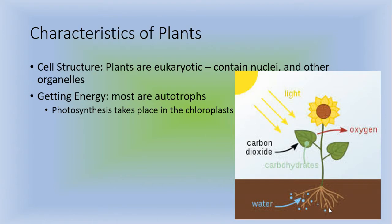Characteristics of plants. Cellular structure wise, plants are eukaryotic meaning they contain nuclei and other organelles. And when they get energy most of the time they're autotrophs. So plants are going to take in light through their chloroplasts.